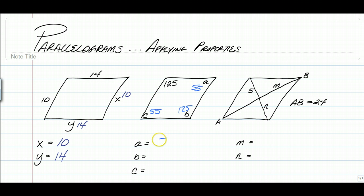So angle A is 55 degrees, angle B is 125 degrees, and angle C is 55 degrees. Alright, let's move on.